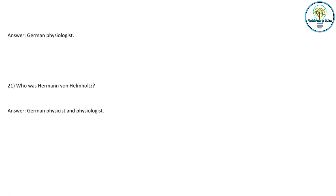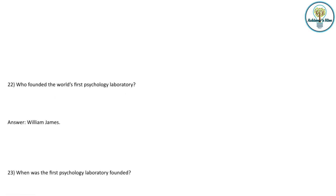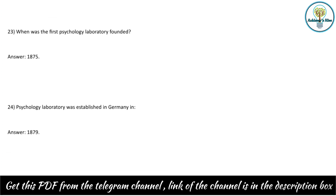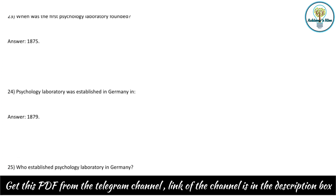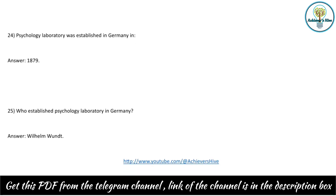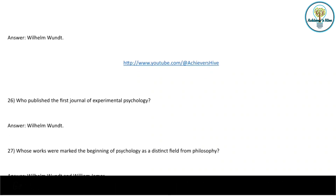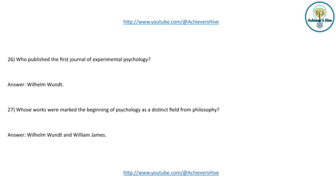Who founded the world's first psychology laboratory? The correct answer is William James, in 1875. A psychology laboratory was also established in Germany in 1879 by Wilhelm Wundt, who is also known as the father of psychology. Who published the first journal of experimental psychology? Again Wilhelm Wundt is the correct answer. Whose works marked the beginning of psychology as a distinct field from philosophy? These are the two names: Wilhelm Wundt and William James.